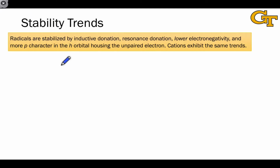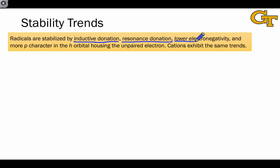Because radicals are electron deficient species, they're stabilized by the same things that stabilize carbocations: inductive donation, here primarily from alkyl groups, are the major contributors. Resonance donation from lone pairs or pi bonds adjacent to the radical center, lower electronegativity of the atom bearing the unpaired electron, and more p-character in the orbital housing the unpaired electron — we saw that in the last video.